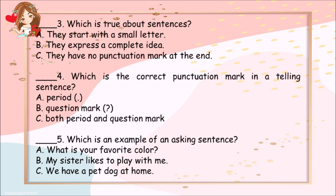Question 3: Which is true about sentences? A. They start with a small letter. B. They express a complete idea. C. They have no punctuation mark at the end. Question 4: Which is the correct punctuation mark in a telling sentence? Question 5: Which is an example of an asking sentence? A. What is your favorite color? B. My sister likes to play with me. C. We have a pet dog at home.